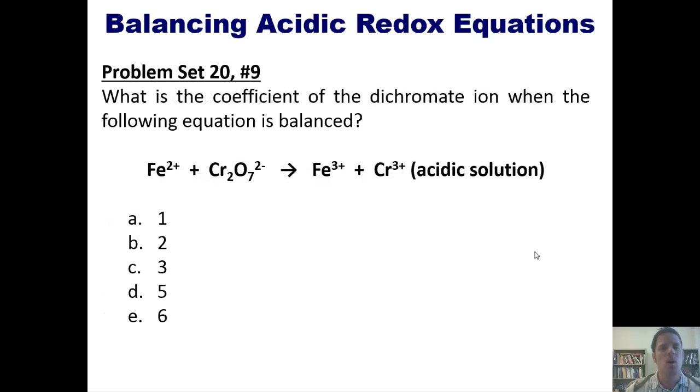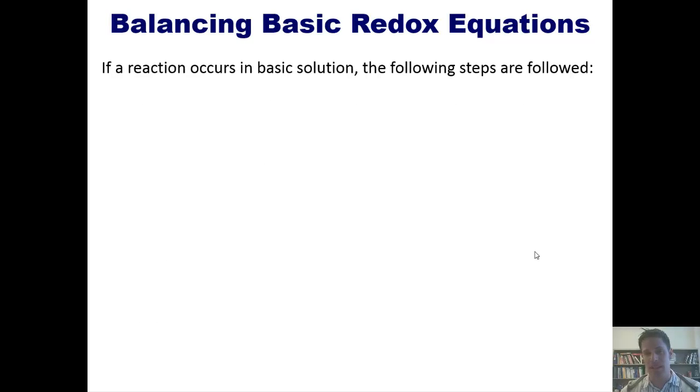And lastly, this one. What is the coefficient of the dichromate ion when the following equation is balanced? Similar to the previous one. If any of you guys are taking this class from me, you want to see it, you can come to class. All right. Now, I promised you that there are two different ways of doing this, one under acidic conditions and the other under basic conditions. Now, if a reaction occurs under basic solution, we have to follow these steps, which are slightly different.